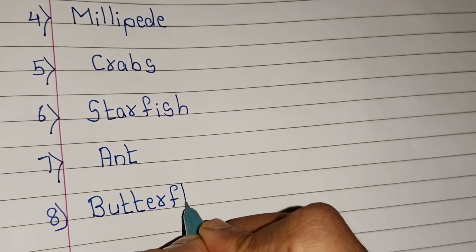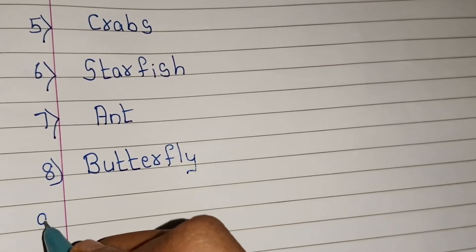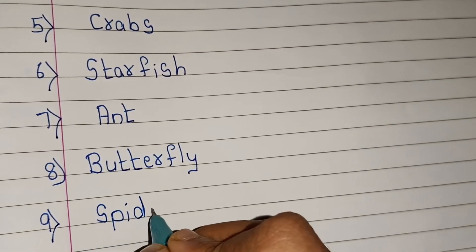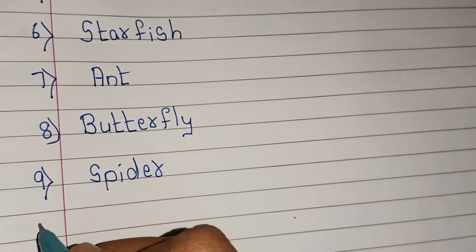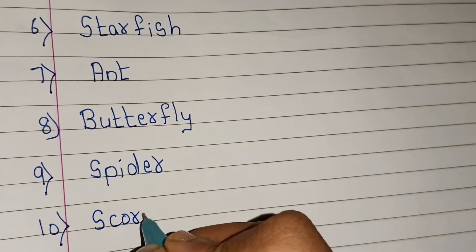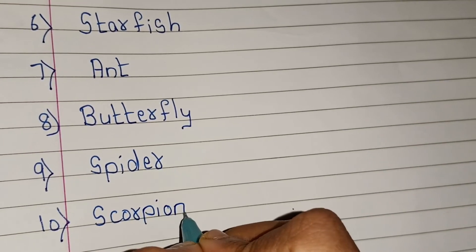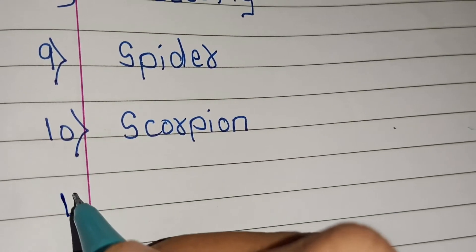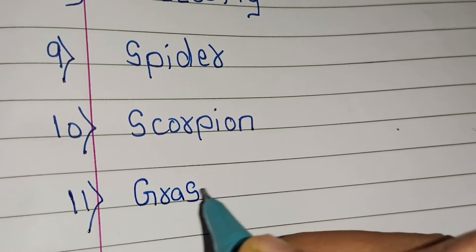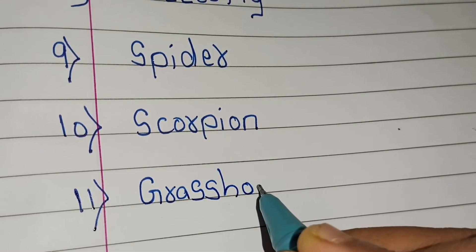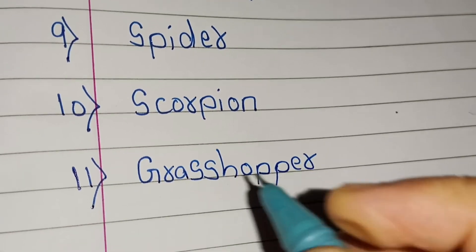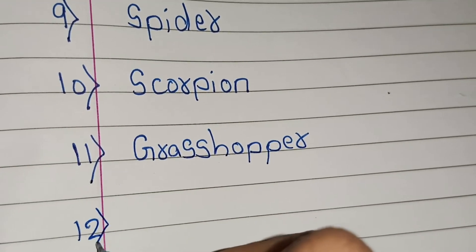These animals or insects don't have backbones. Ninth: spider. Tenth: scorpion. Eleventh: grasshopper. Twelfth: earthworm.